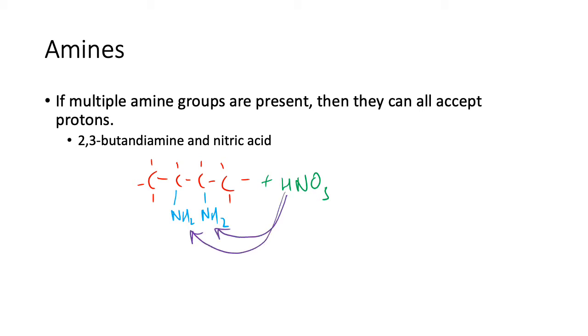Which means that I'll end up with something that looks like this - again the butane chain, again the N H now it's going to be a three and H three and these will both be positives. And then I've got all the other carbons there and then I've got the leftover nitrate ions.